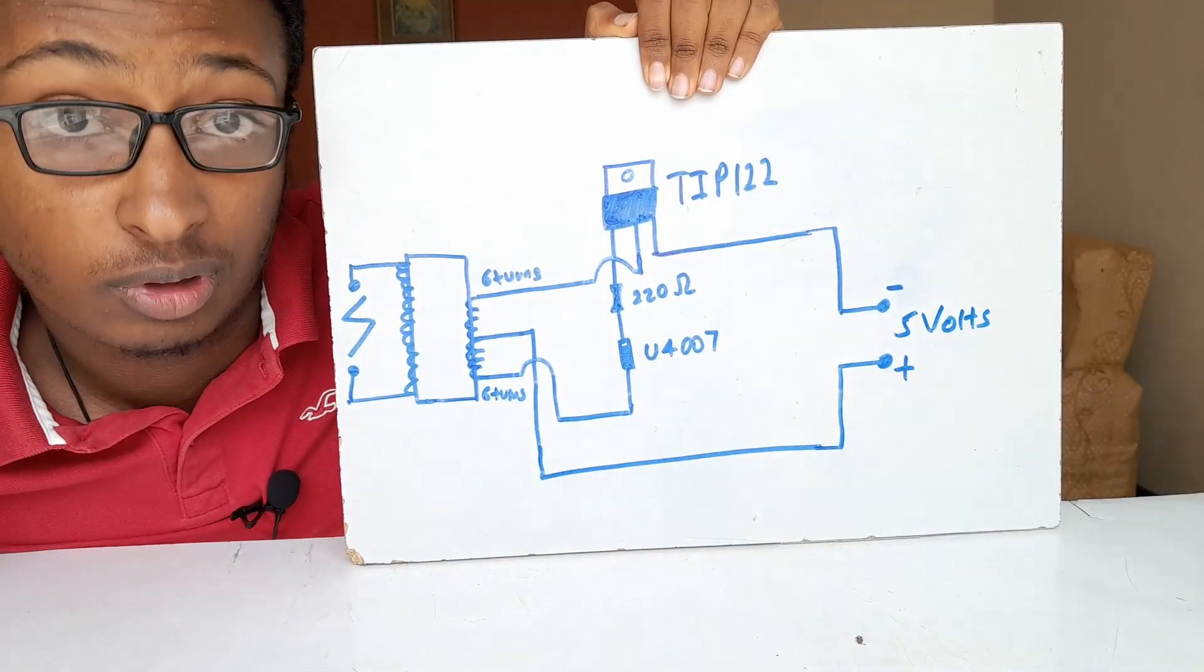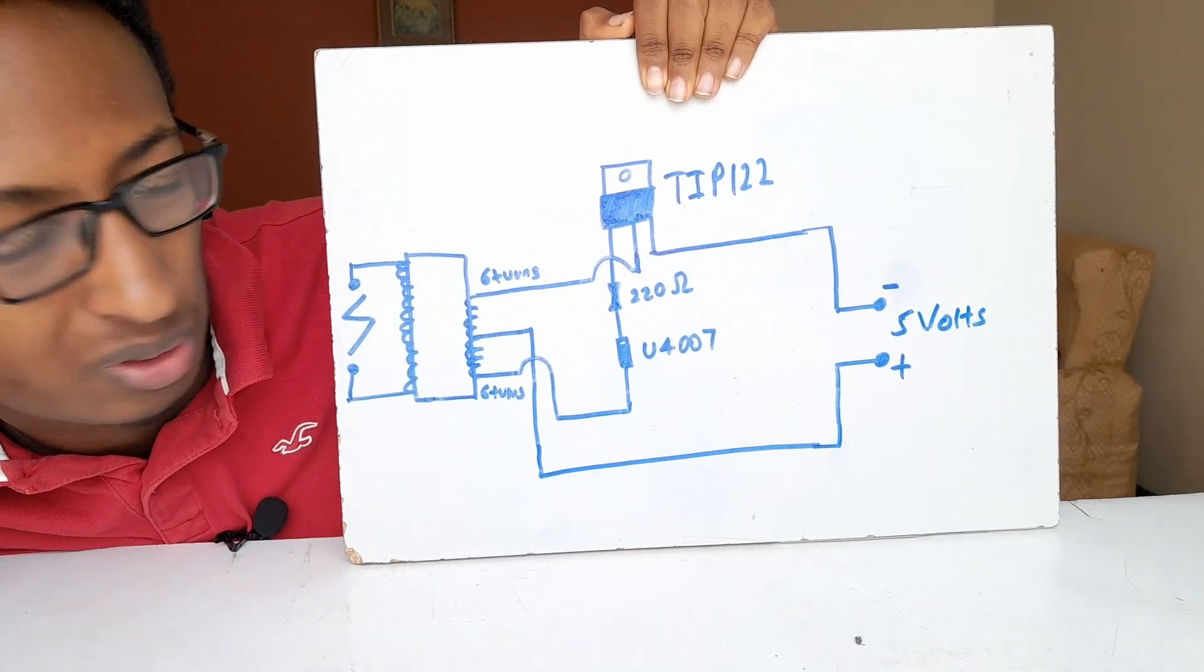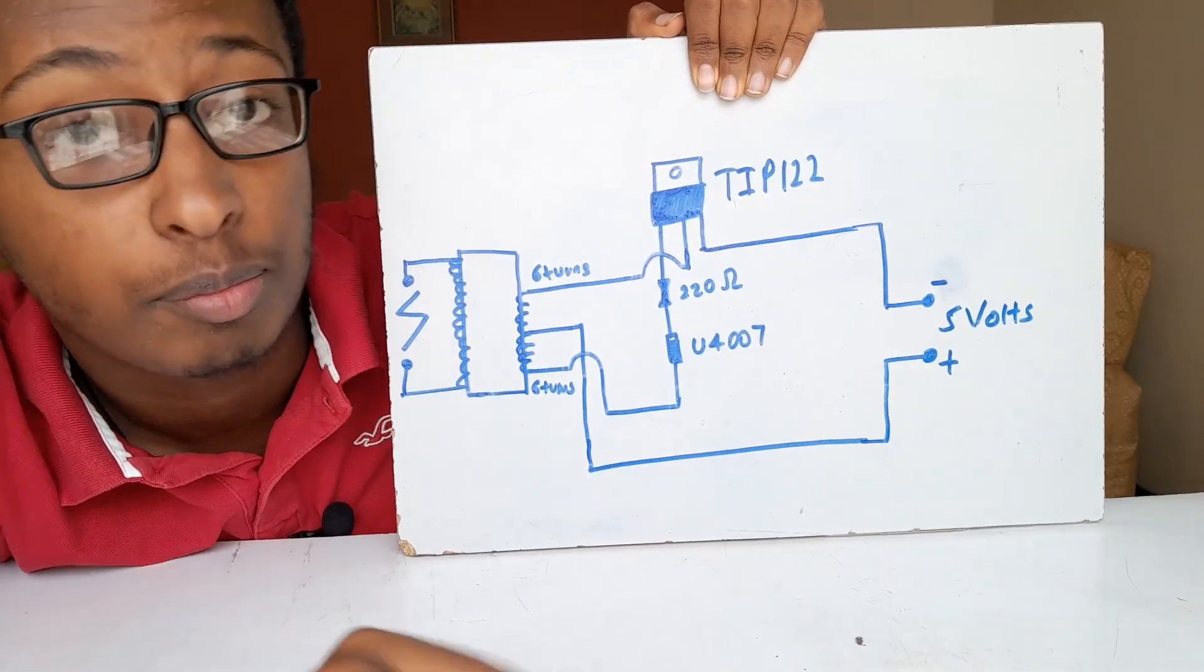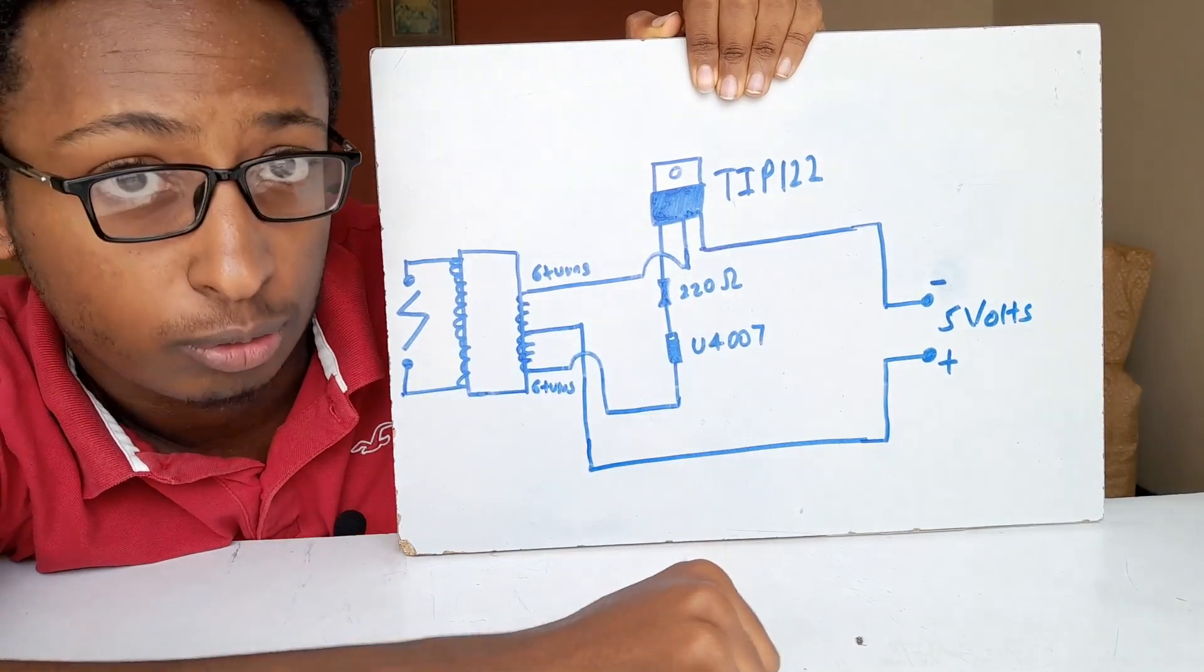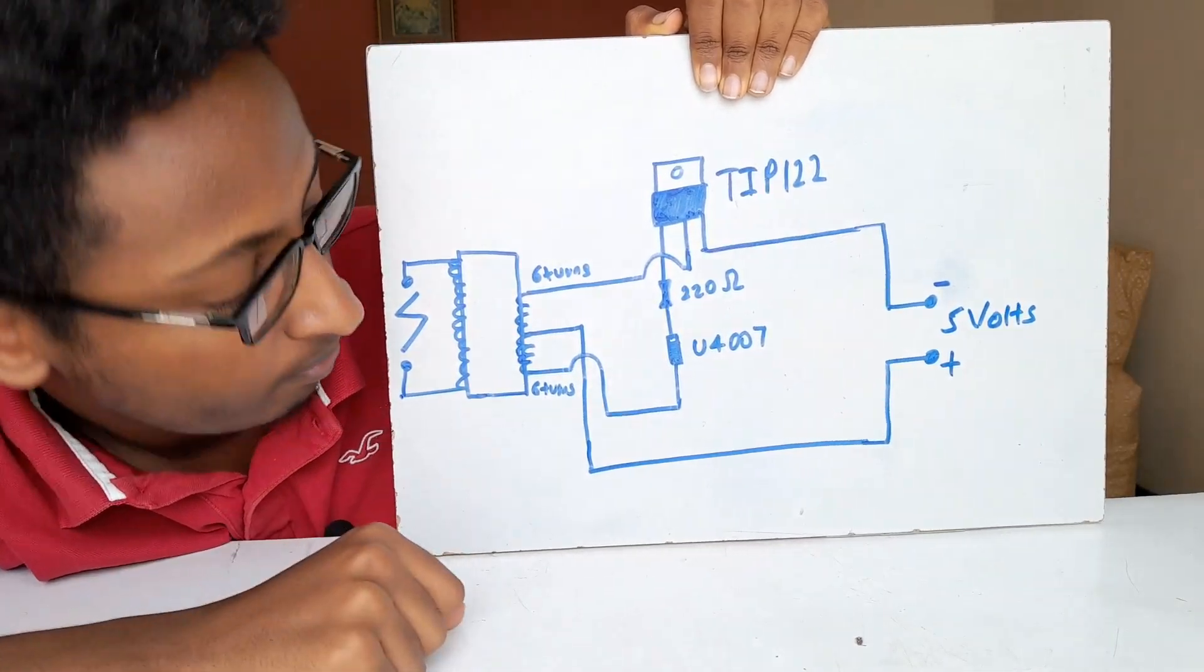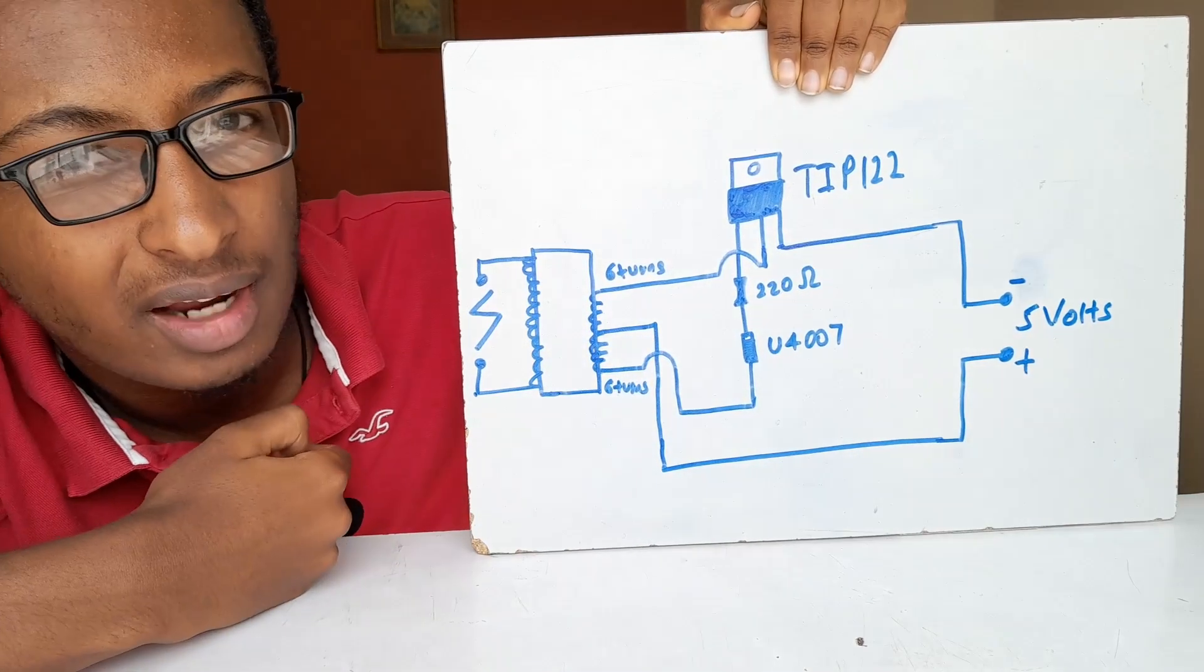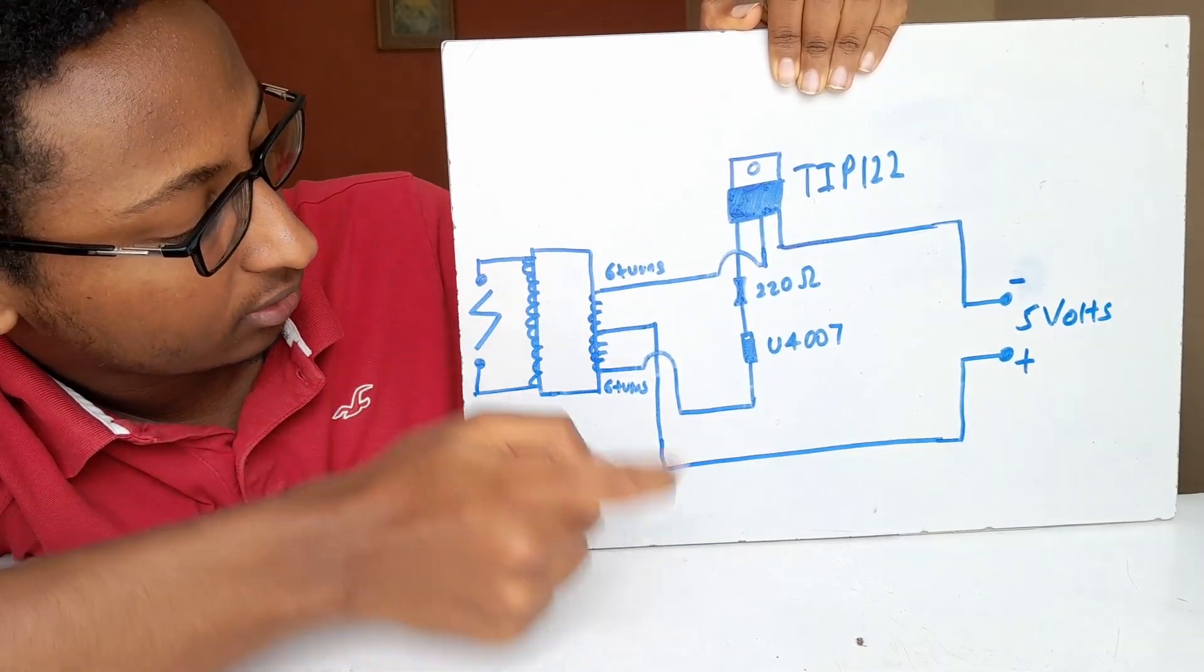Okay guys, I actually took time doing this. It was exhausting to be honest. I'm not an artist, but this will suffice. As you can see here, there's a transistor. The transistor I chose is TIP122 because it's easier to get. I use a resistor of 220 ohms and a diode U4007. Now the turns - there's inductor one here and inductor two here. For me I did the same amount of turns - six turns each.